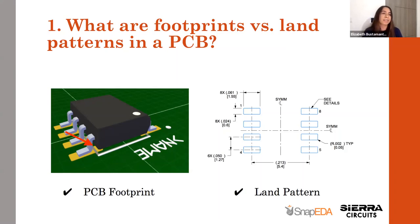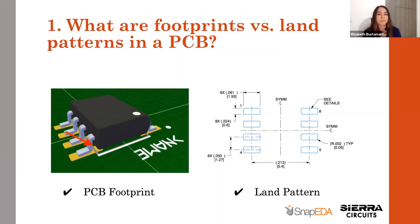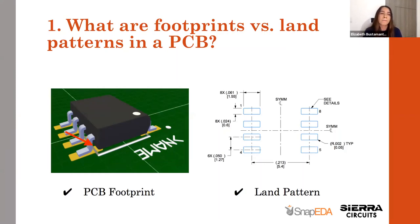One thing worth mentioning is that a component can have multiple land patterns based on the IPC density level that you follow, and there are also other parameters. You can only have one footprint for a component, but you can have multiple land patterns. Throughout this presentation, we'll be referring to footprints as land patterns.